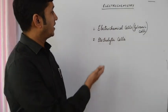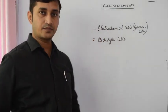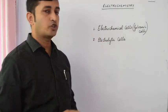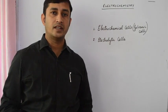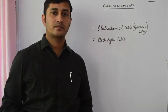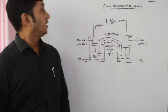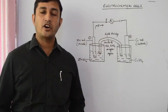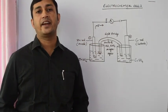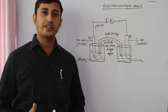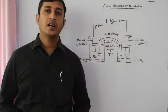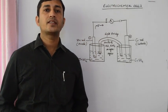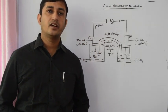So first let us start with electrochemical cells. An electrochemical cell is a device in which a redox reaction is carried out and the decreasing free energy appears as electrical energy. It is also known as a galvanic cell or voltage cell.